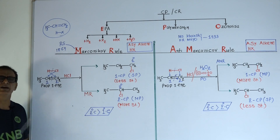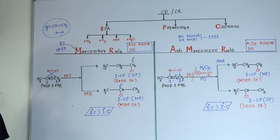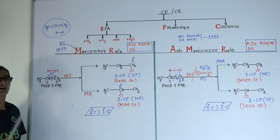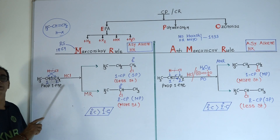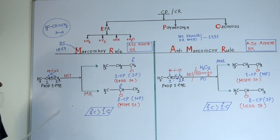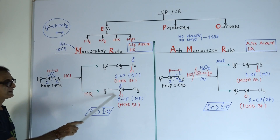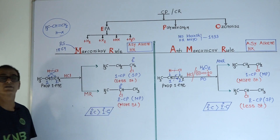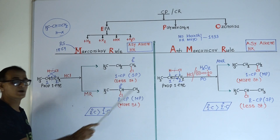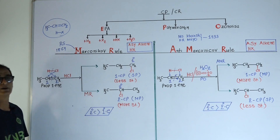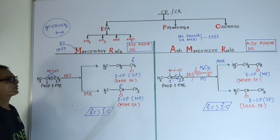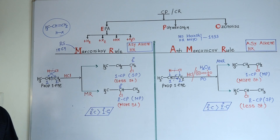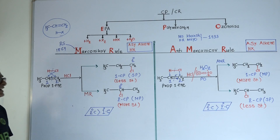The positive part (hydrogen) will attach with the carbon having more number of hydrogen atoms, and chlorine will attach with the carbon having less number of hydrogen atoms. Therefore, 2-chloropropane will be the main product — it is more stable — and 1-chloropropane will be the subsidiary (less stable) product. Why is one less stable and the other more stable?